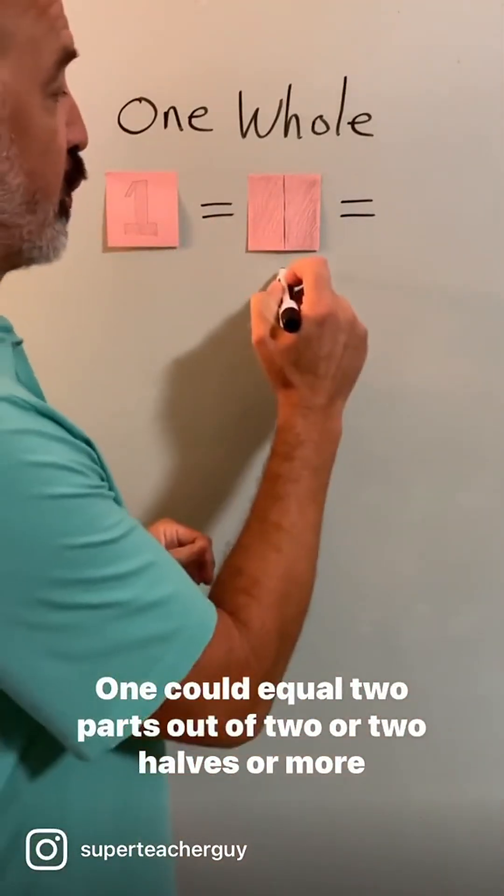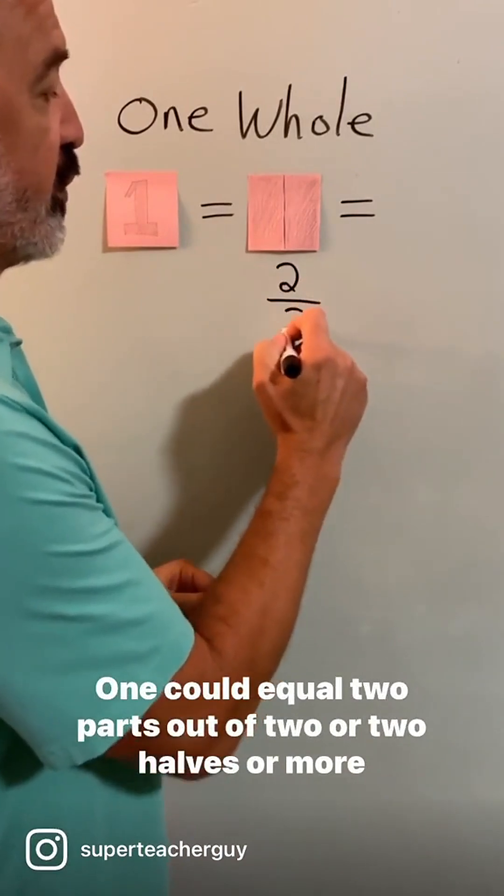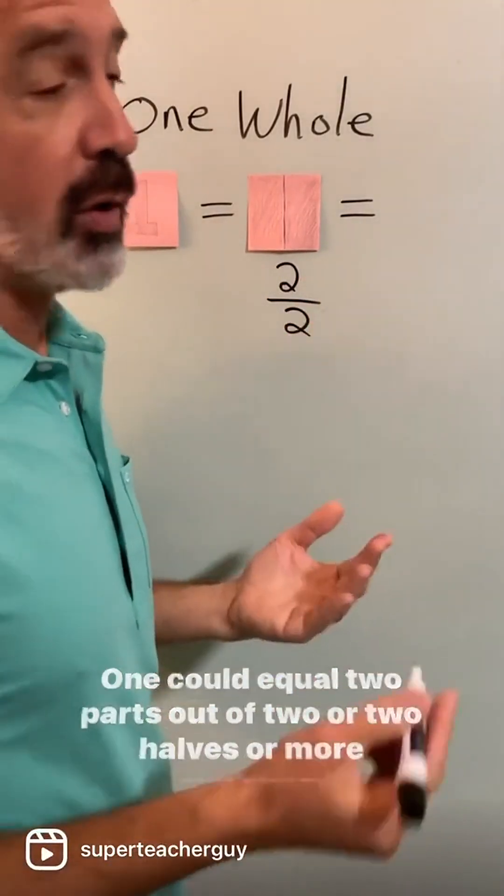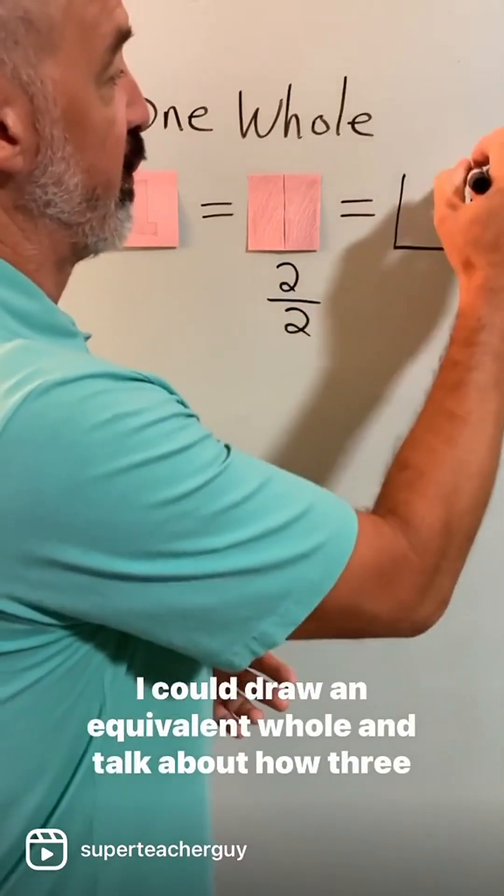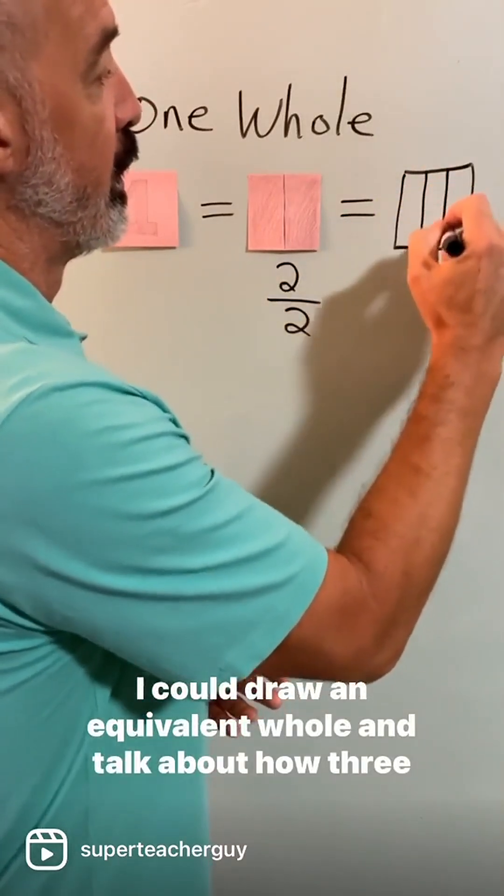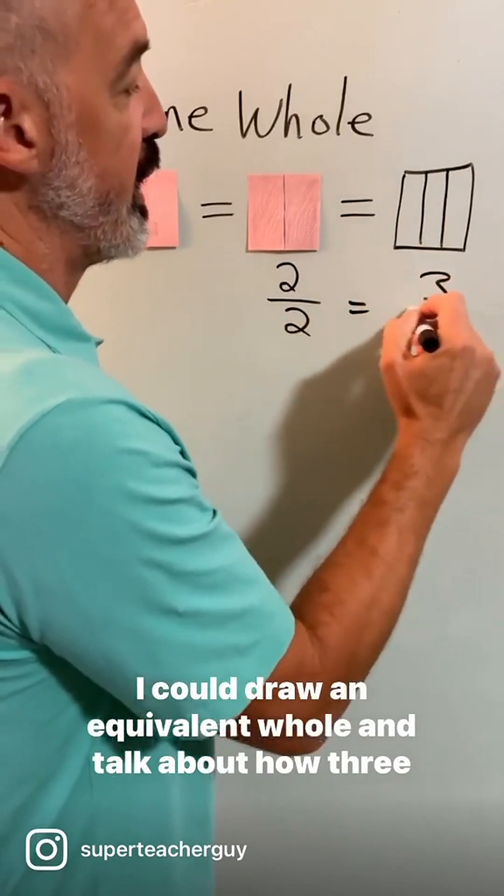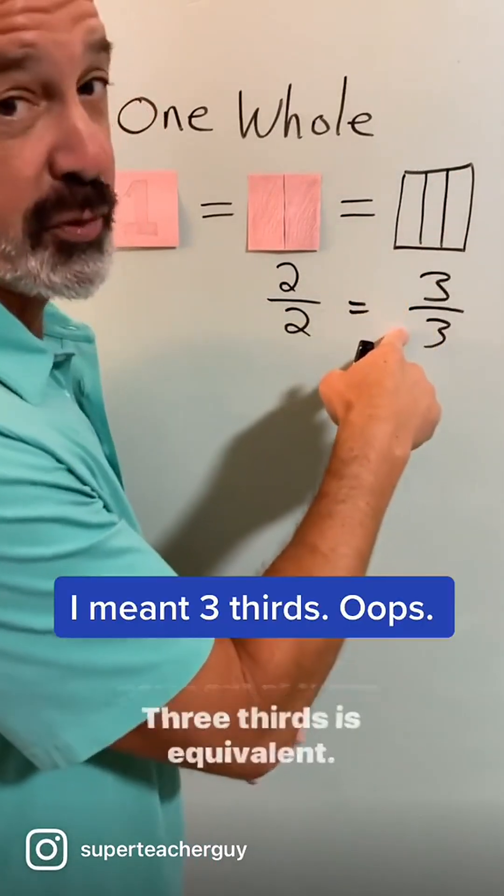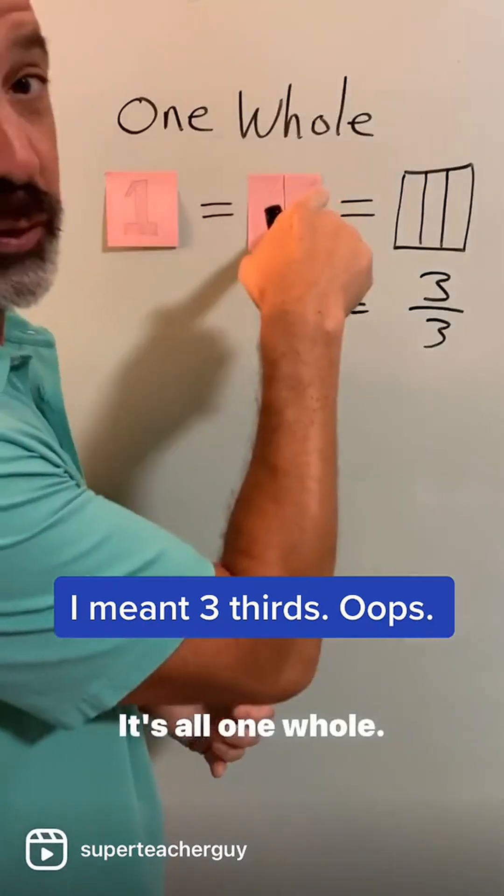One could equal two parts out of two or two halves or more and more. I could draw an equivalent whole and talk about how three parts out of three, three thirds is equivalent. It's all one whole.